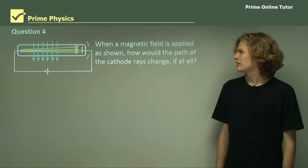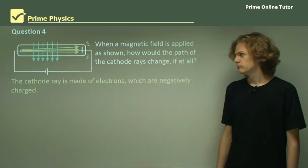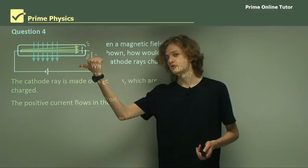Question 4. When a magnetic field is applied to a cathode ray tube, as shown here, how would the path of the cathode rays change, if at all? Now, we can solve this by using the right-hand rule. The cathode ray is made of electrons, which are negatively charged particles. This means that the positive current flows in the direction opposite to the motion of the cathodes.